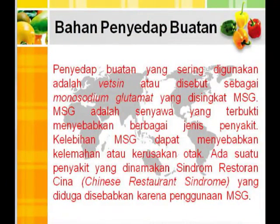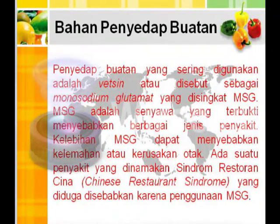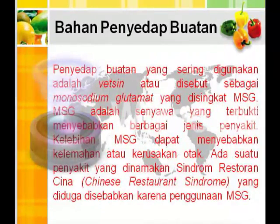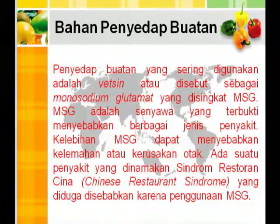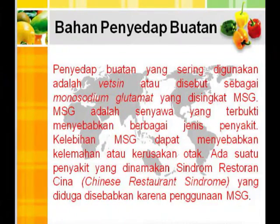Bahan penyedap buatan adalah bahan yang sering digunakan untuk menyedapkan makanan. Bahan penyedap buatan yang sering digunakan oleh masyarakat adalah vetsin atau yang disebut dengan monosodium glutamat yang disingkat dengan MSG. MSG adalah senyawa yang terbukti menyebabkan berbagai jenis penyakit. Kelebihan MSG dapat menyebabkan kelemahan dan kerusakan otak. Ada suatu jenis penyakit yang dinamakan sindrom restoran Cina atau Chinese Restaurant Syndrome yang diduga disebabkan karena penggunaan MSG.